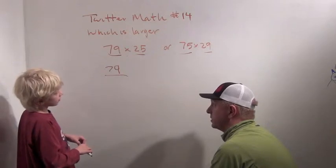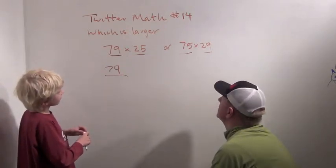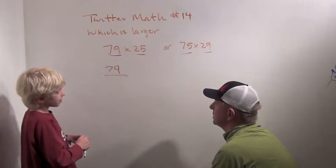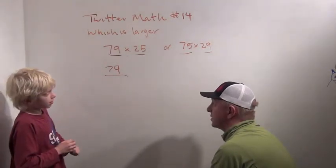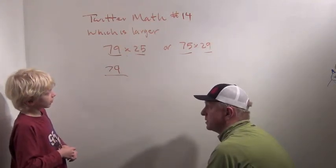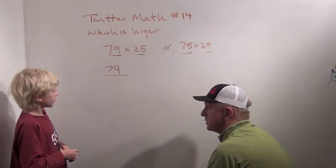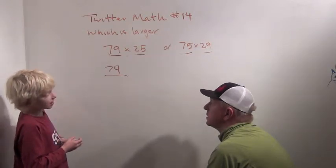Which one's bigger? Well, 7 times 7 is 49, so we have to check up to 8. But 8 times 8 is 64, so that's not bigger than 79. Well, so we have to check up to 9 times 9 then. Yeah. So 9.